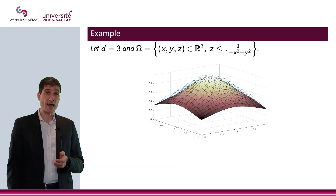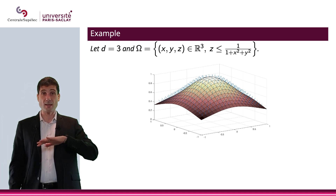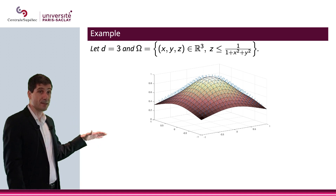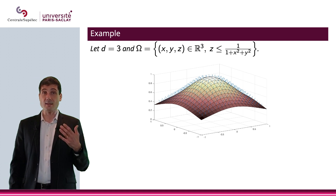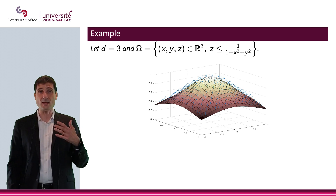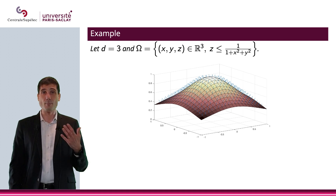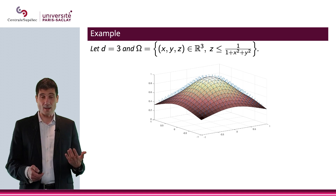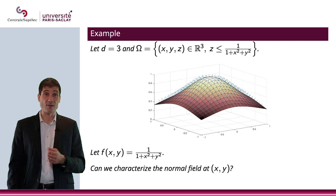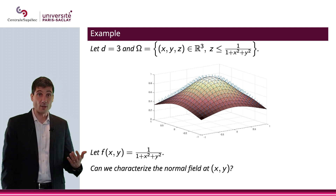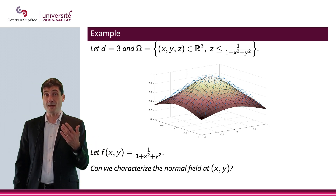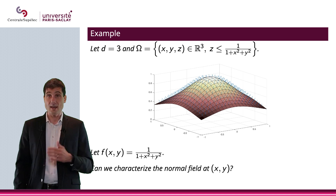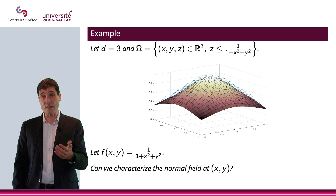Finally, consider omega in R^3 as the set of all points (x, y, z) such that z < 1/(1 + x² + y²) — that is, all points below that surface. If f(x,y) = 1/(1 + x² + y²), the question is: can we characterize the outward normal vector field? The answer is yes — it is going to be expressed using the gradient, and we will discuss this in the next videos.